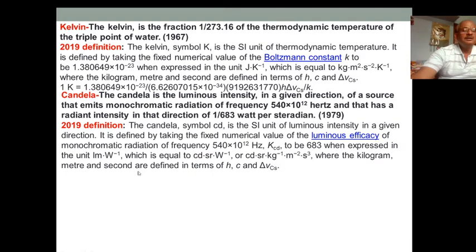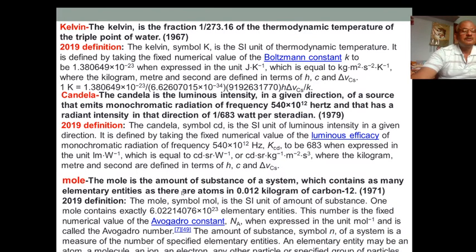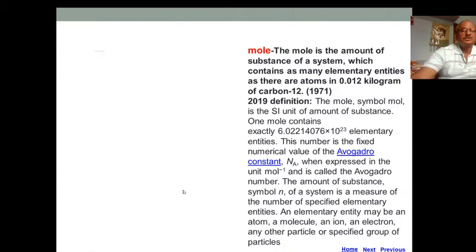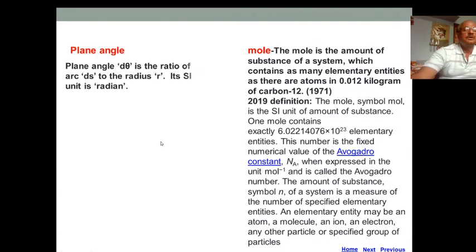Now the plane angle. Plane angle θ is the ratio of arc ds to the radius r. So if this arc length is ds and radius is r, then dθ equals ds by r.